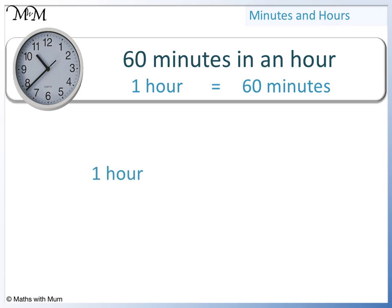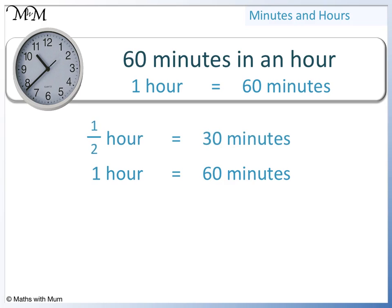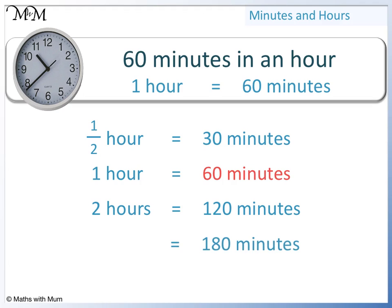If we know that 1 hour equals 60 minutes, we can work out how many hours 30 minutes is. 30 is half of 60, so it is half an hour. We can also work out how many hours 120 minutes is — we find how many times 60 divides into 120. If we cancel the zeros, 6 goes into 12 twice, so 2 hours. 180 divided by 60 is 3, so 3 hours. 240 divided by 60, or 24 divided by 6 is 4, so 4 hours.